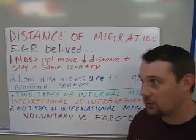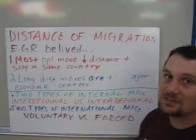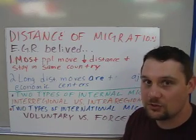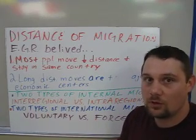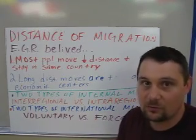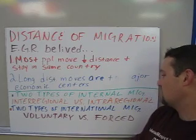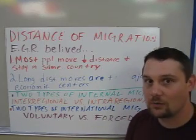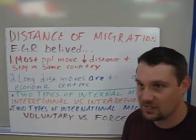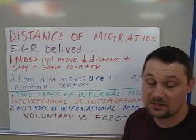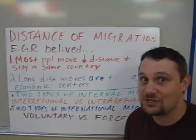Internal migration means that you stay in your same country. There are two types of internal migration. One is interregional — that means you move from one region of your country to another, for example moving from Texas to New York City. The other type is intra-regional, meaning you move to a different place within your own region — for example, moving from Dallas to Austin, or from Dallas to Oklahoma City, because Oklahoma City is in the same basic region as Texas.